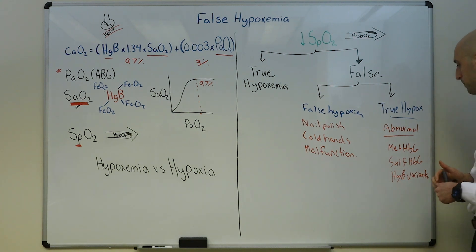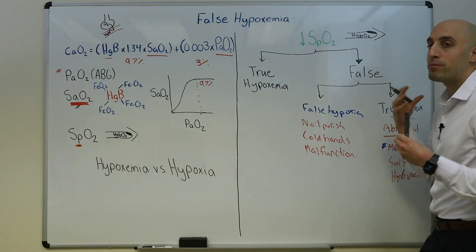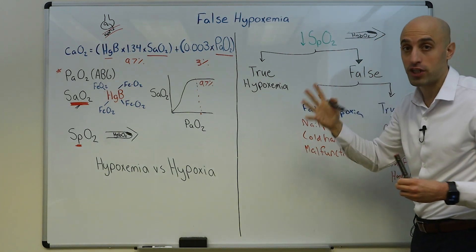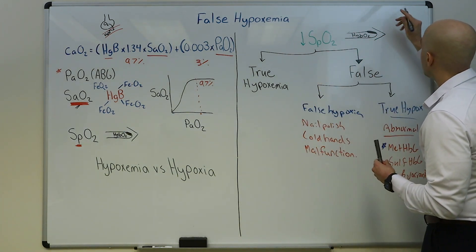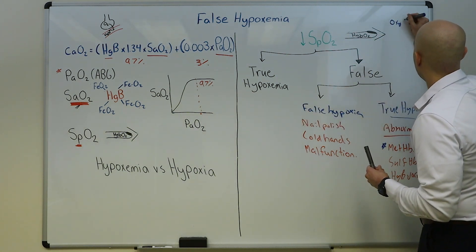For example, methemoglobinemia, sulfhemoglobinemia, and even other hemoglobin variants. So what happens here? Let's just talk about methemoglobin as our example. Methemoglobin absorbs the light from the pulse ox like the oxyhemoglobin.